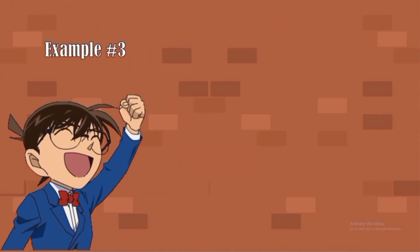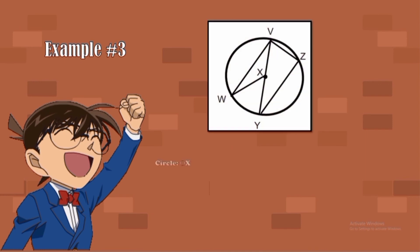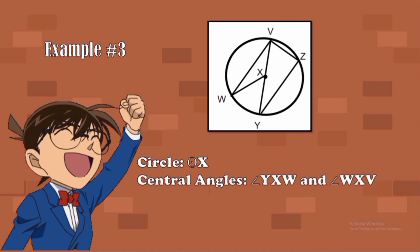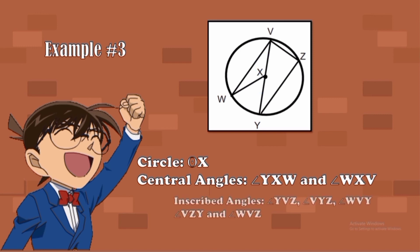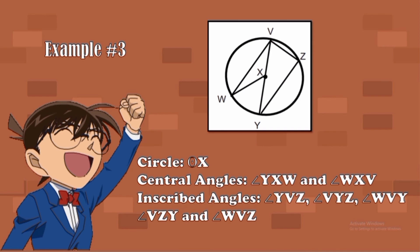Example number three. Here is the illustration. This is Circle X. Our central angles are angle Y-X-Z and angle W-X-V. We have five inscribed angles: Angle Y-V-Z, Angle V-Y-Z, Angle W-Y-V, Angle V-Z-Y, and Angle W-V-Z.